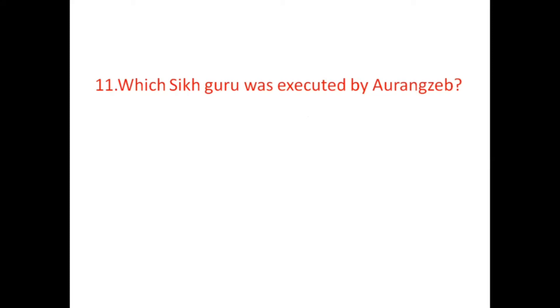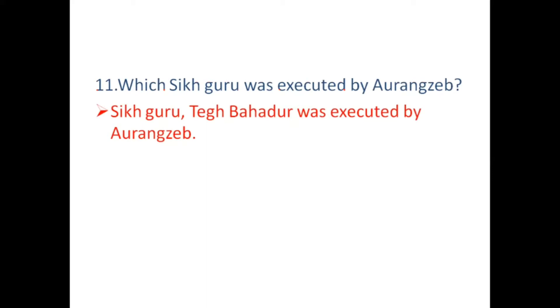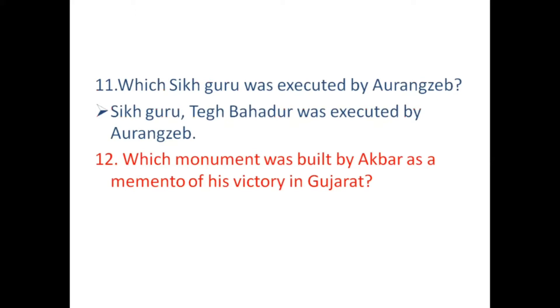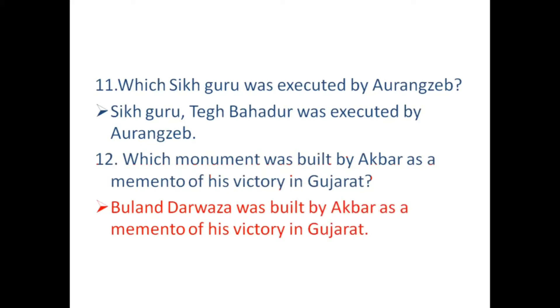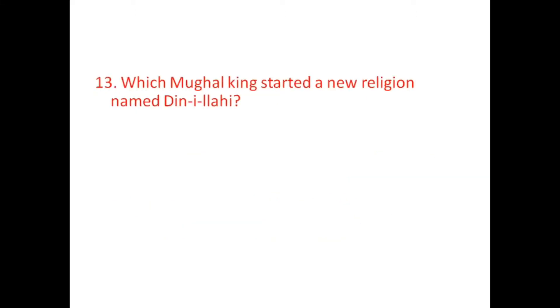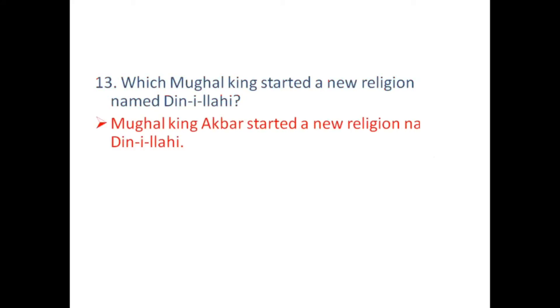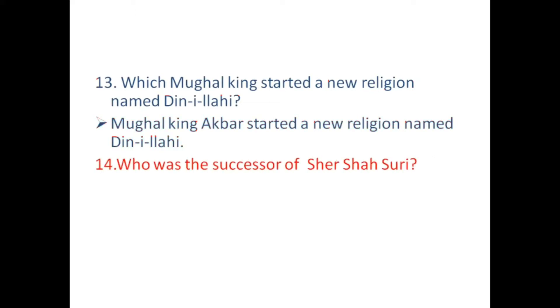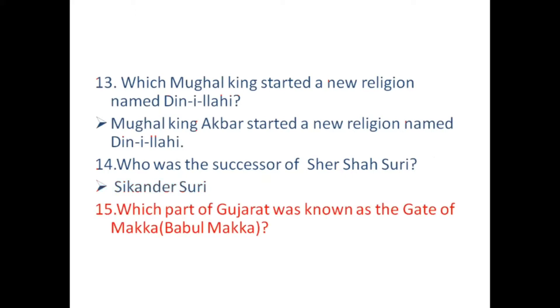Which Sikh Guru was executed by Aurangzeb? Which monument was built by Akbar as a memento of his victory in Gujarat? Buland Darwaza was built by Akbar as a memento of his victory in Gujarat. Which Mughal king started a new religion named Din-i-Ilahi? Who was the successor of Sher Shah Suri? Sikandar Suri was the successor of Sher Shah Suri. Which port of Gujarat was known as the Gate of Mecca? Surat was known as the Gate of Mecca.